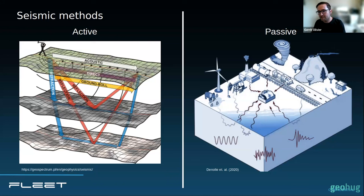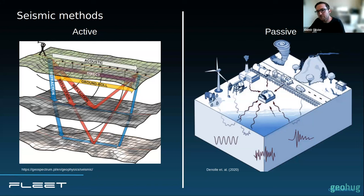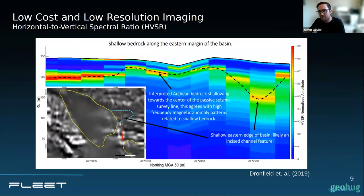On the other hand, we have passive seismic methods, which rely on the natural vibrations occurring on earth. At low frequencies, this is typically generated by the ocean interacting with the coast and wind interacting with lakes. At higher frequencies, it's generated by human activity. Within these two categories, you've probably heard of two methods. The first is HVSR — a relatively low-cost method but with relatively low resolution and depth penetration. It's been used quite effectively in Western Australia to get the depth of shallow cover or regolith, and to get ideas of paleo channels.